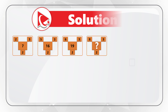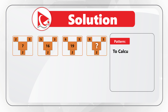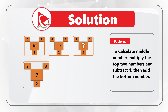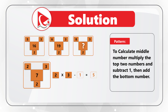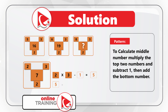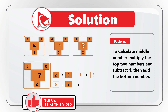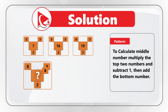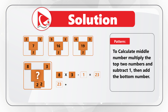The pattern here is that to calculate the middle number, you multiply the top two numbers and subtract one, then add the bottom number. Let's look at the first shape to confirm: 2 multiplied by 3 minus 1 equals 5. 5 plus 2, which is the bottom number, equals the middle number, which is 7. Applying the same pattern to the shape with the missing number: 8 multiplied by 3 minus 1 equals 23. 23 plus 2 equals 25, so the correct choice here is choice C, 25.